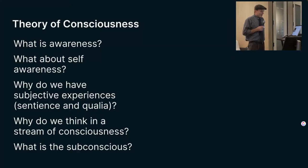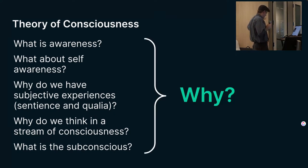As we put all these things together, we're starting to realize that if we're going to have a full theory of consciousness, we're going to have to answer a lot of really hard questions. What is awareness? What is self-awareness? Why do we have these subjective experiences? Why do we think in a stream of consciousness? And what is the subconscious mind? Why do thoughts pop into our heads as if they're coming from nowhere? And for every single one of these questions, we're going to have to answer something really tough. Why? Why is it there? Why did we develop it? Why was there evolutionary pressure for these aspects of consciousness to evolve?